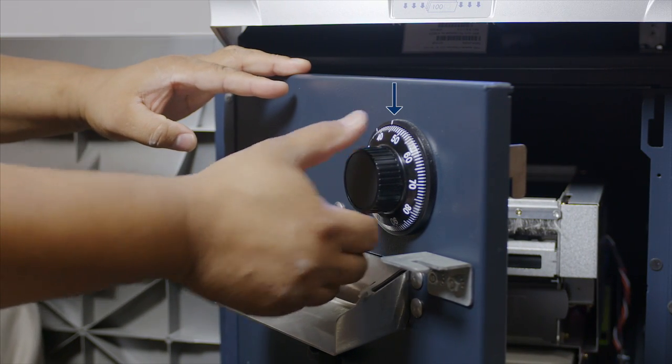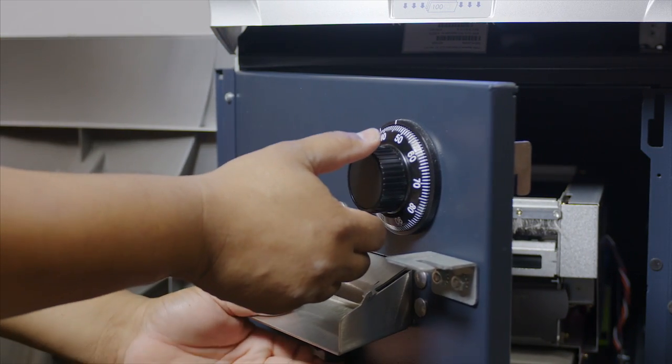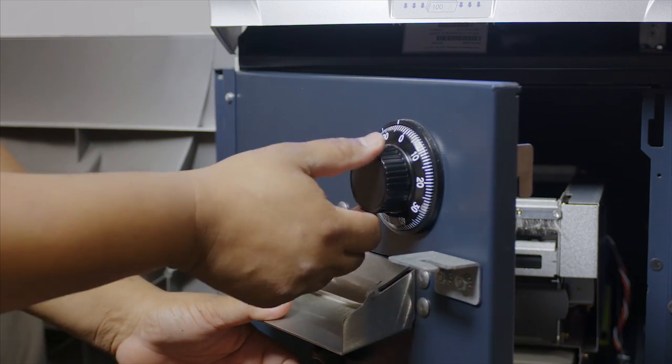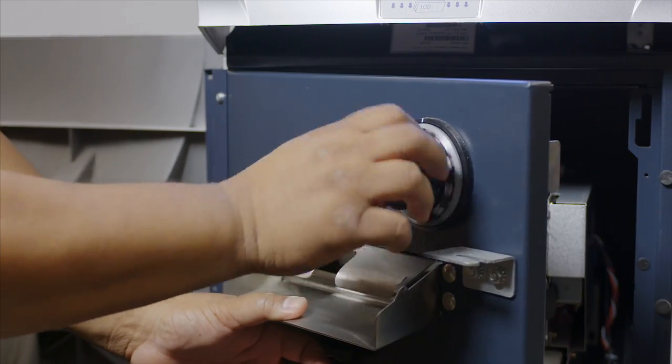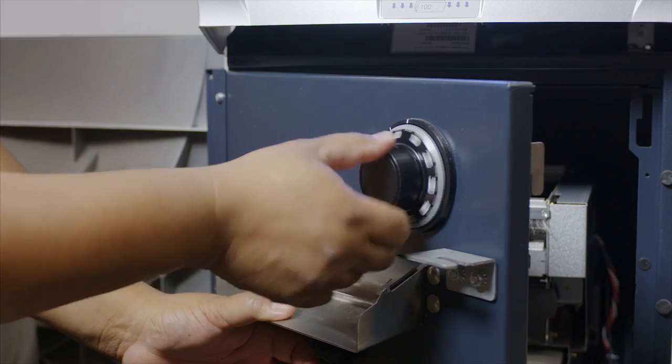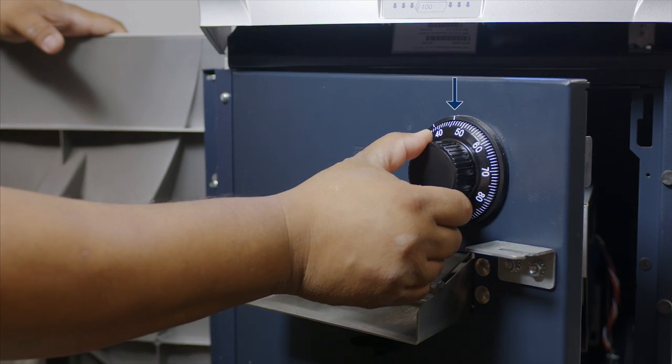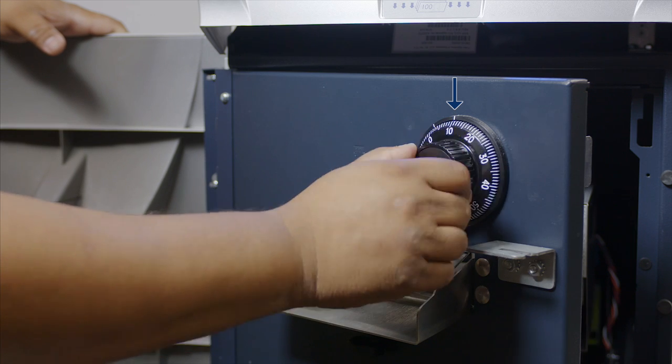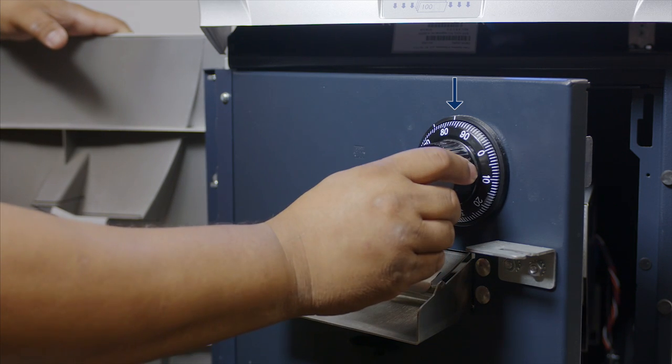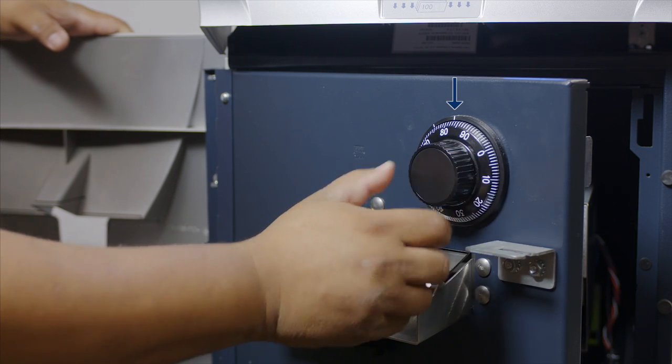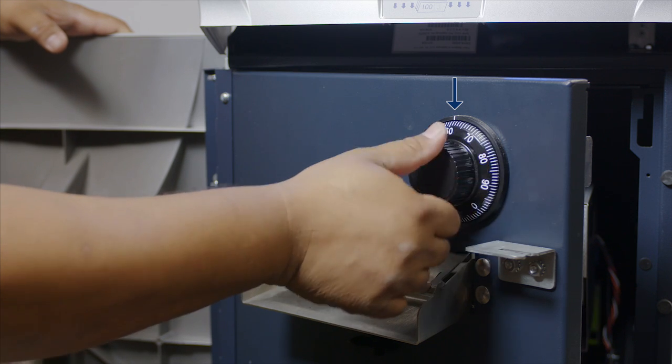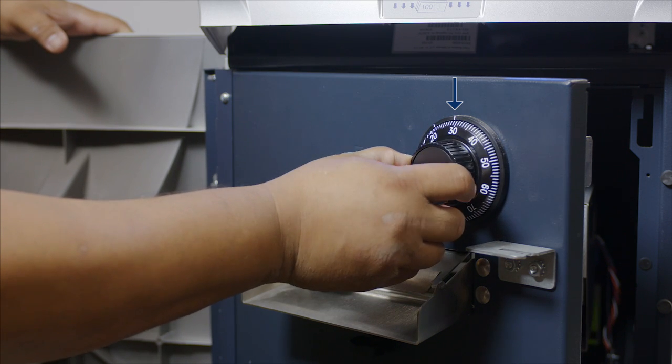Using the open index, let's put in our new combination and test to make sure the door opens. Turning counterclockwise four times past the first digit and stop on your first digit. Now turn clockwise to the second digit. Now turn counterclockwise two times past the third digit.